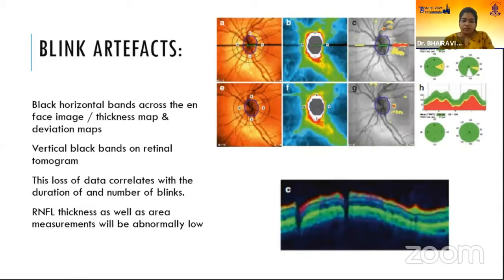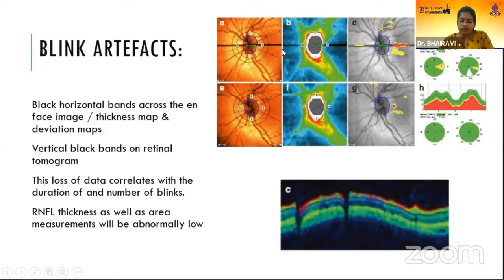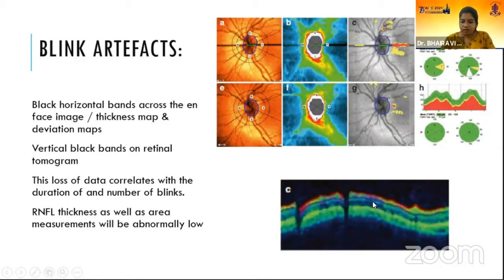Blink artifacts are caused when the patient blinks during scan acquisition. They can be seen as black horizontal bands on the thickness map and vertical black bands on the retinal tomograph. The loss of data correlates with the duration and number of blinks. The RNFL as well as area measurements will be abnormally low in these areas.